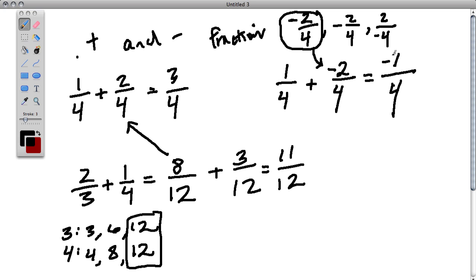So here, what we get is negative 1 fourth. In this situation, if we had 2 thirds plus negative 1 fourth, I would rewrite the equation just as I did right here.